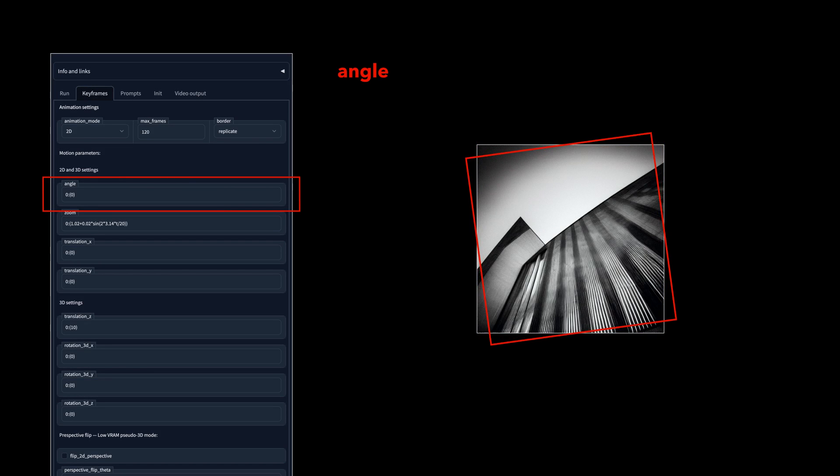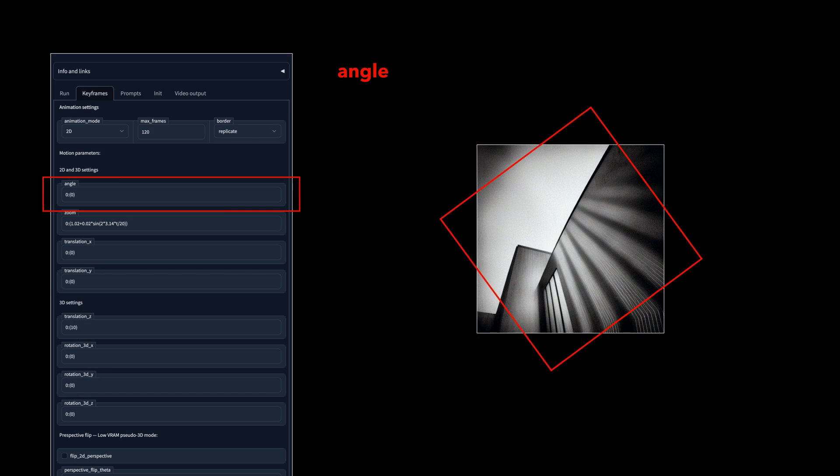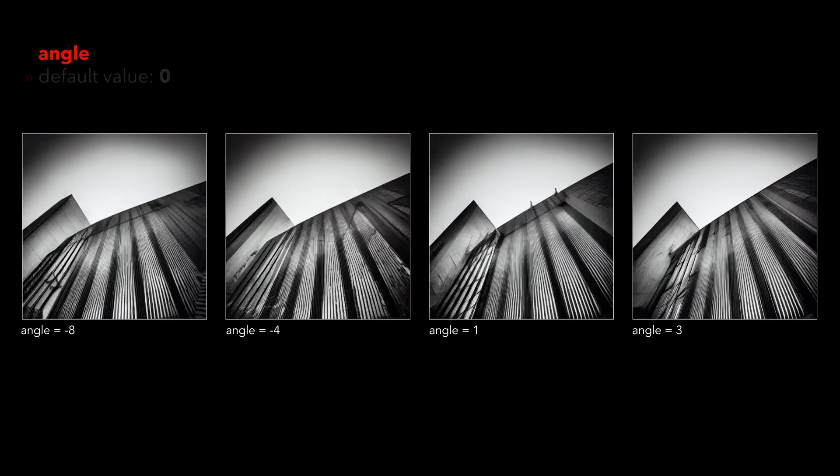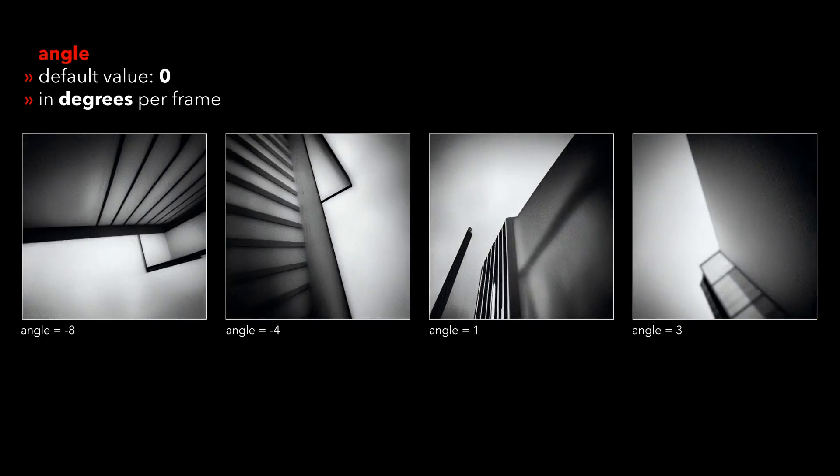The angle parameter lets us rotate the canvas by degrees per frame. A negative value to the right. A positive value to the left.